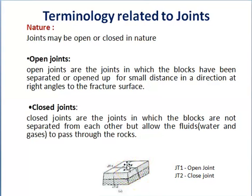Closed joints are joints in which the blocks are not separated from each other — there is no such separation. JT2 is a closed joint, but such type of joints allow fluids to pass through the rocks.